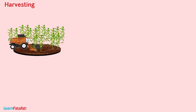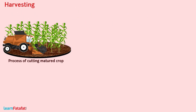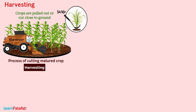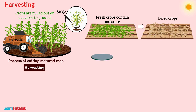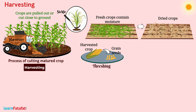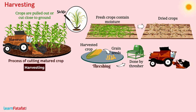Harvesting: The process of cutting matured crop is called harvesting. In this process, crops are pulled out or cut close to the ground either by sickle or by harvester. Fresh crops contain moisture, so these must be dried in the sun. The separation of grain seeds from harvested crop is called threshing. It is done by a thresher. There is another machine called a combine, which is the combination of harvester and thresher.